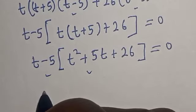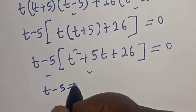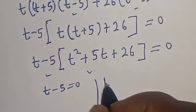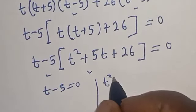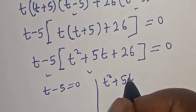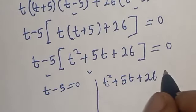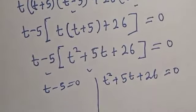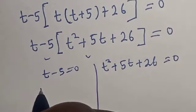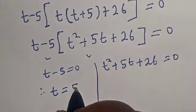There are two cases here. The first case is t minus 5 equals 0, and the second case is t squared plus 5t plus 26 equals 0. From the first case, t minus 5 equals 0, therefore t equals 5.